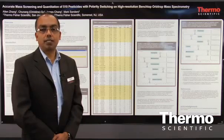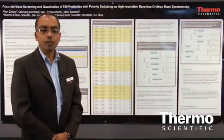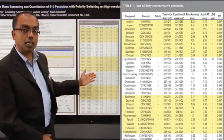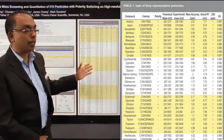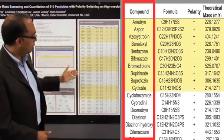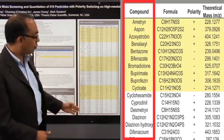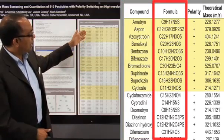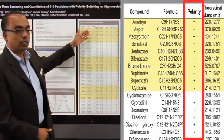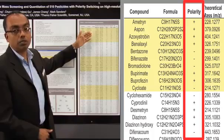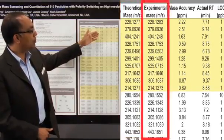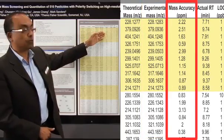The Exactive Orbitrap platform operates in high resolution mode and has extremely high mass accuracy — typically we can achieve mass accuracies to less than 2 ppm. Here we have an example of 60 of these pesticides, a snapshot of the 510. On the left we have the list of compounds in alphabetical order from ametrin down to ofrin. The elemental formula is given here, as well as the polarity of the instrument used to ionize these compounds, either in positive or negative electrospray. The theoretical mass is given, followed by the experimental mass and the mass accuracy in parts per million.